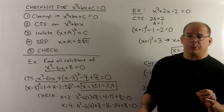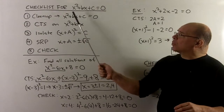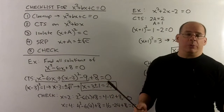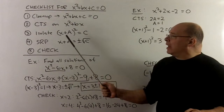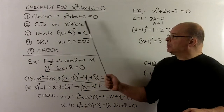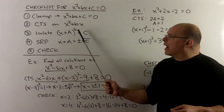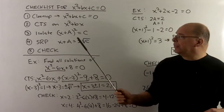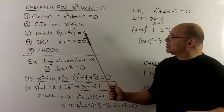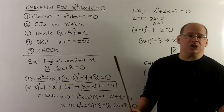Let's go back to the type of problem on the first board and give a checklist to organize all the steps. We're trying to solve x squared plus bx plus c equal to zero. First, clean up the problem — remove parentheses, fractions, etc. — to get into standard form. Next, complete the square on the first two terms, x squared plus bx. Then isolate the x plus a, quantity squared, by pushing all number terms to the other side. Apply the square root property, giving plus-or-minus square root of c, then move a to the other side and check.